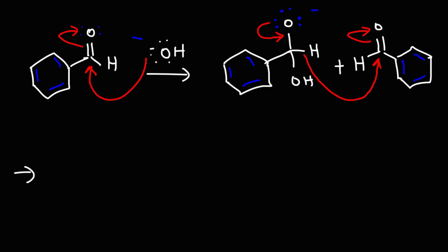Note that in this mechanism, this intermediate releases the hydride ion. Because it releases the hydride ion, it's going to be oxidized. The molecule that accepts the hydride ion is the one that's reduced. So the redox reaction in the Cannizzaro reaction mechanism occurs through a transfer of a hydride ion.